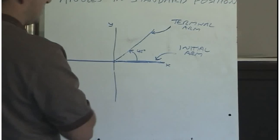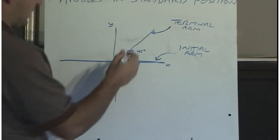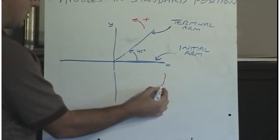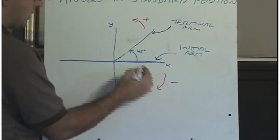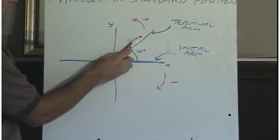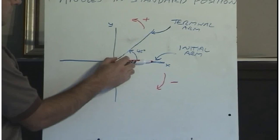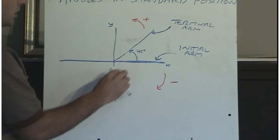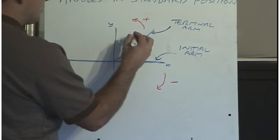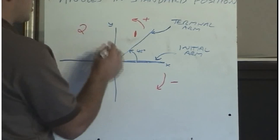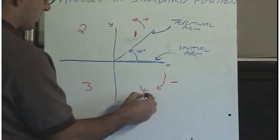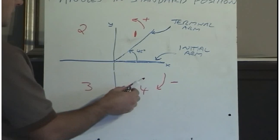Positive angles are measured going counterclockwise. We could also measure a negative angle — we would simply go clockwise. So positive 45 would be a counterclockwise rotation, and negative 45 would be 45 degrees in a clockwise rotation. Because we generally work with positive angles going counterclockwise, we label the quadrants: quadrant 1, quadrant 2, quadrant 3, and quadrant 4.